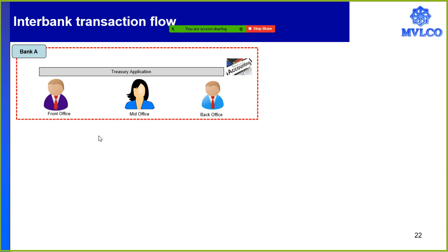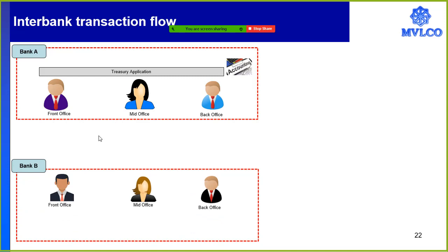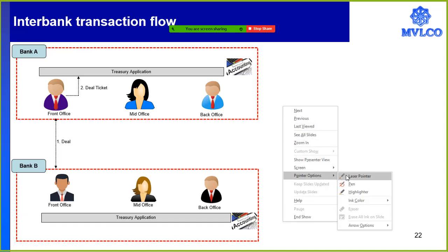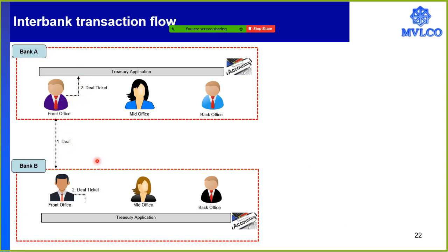I have my treasury application and my accounting system — could be Oracle's FlexCube. Bank A has bank B on the other side with the same setup: front office, mid office, back office, treasury application, and accounting system — maybe Finacle. Now in step number one, I pick up a phone or use the chat system and speak with the other dealer. If I chat, you would have seen that chat. If I speak, I write it down on a blotter. Once I conclude the deal, I open my treasury application — maybe Acumen — and enter my deal ticket. The one who created the deal has also created the deal ticket.